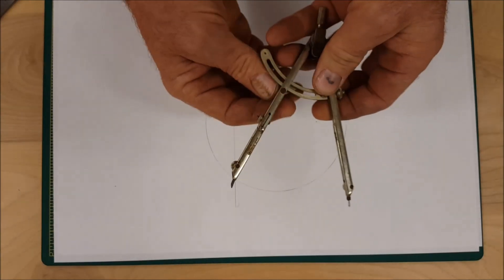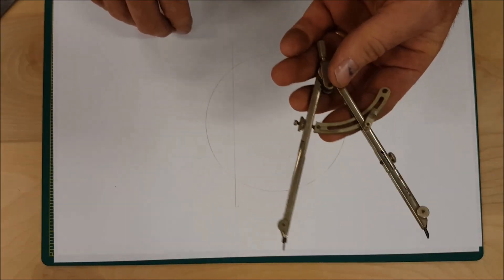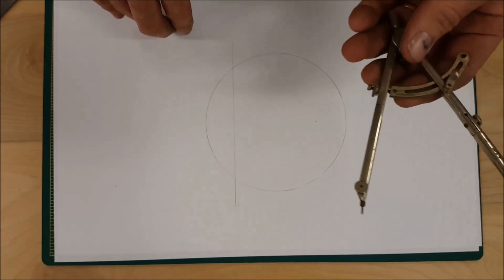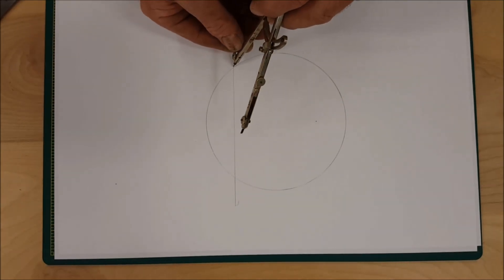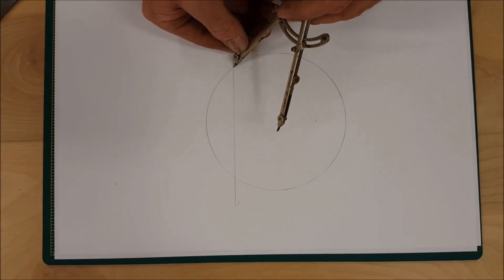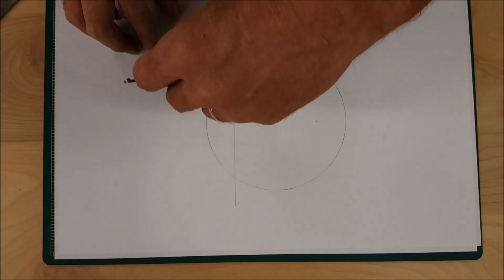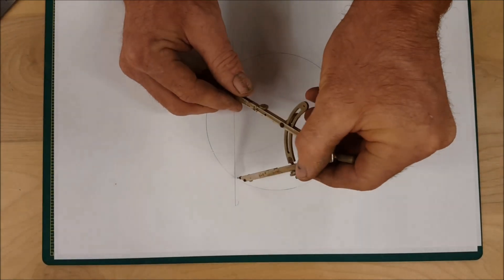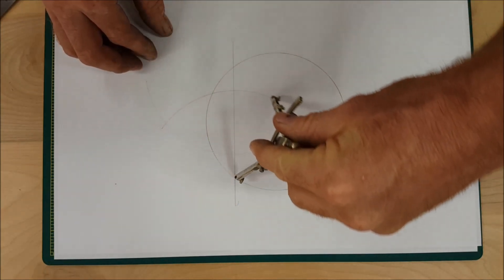After that, you just pick a distance on your dividers or your compass and it doesn't have to be any particular distance. It's completely arbitrary and you're going to draw an arc. So you're going to put the pivot of the compass where the line crossed through the circle and draw an arc there and you do another one where it crosses through the circle on the other side and you draw another arc.